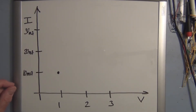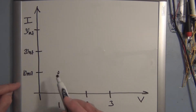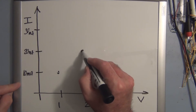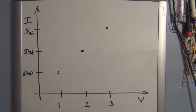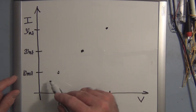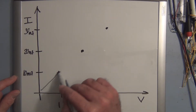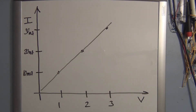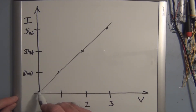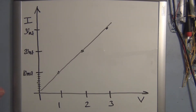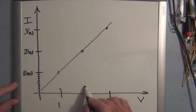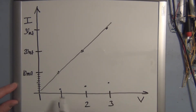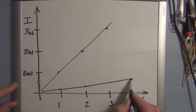For the 100 ohm resistor: at one volt we had 10 milliamps, at two volts we had 20 milliamps, and at three volts we had 30 milliamps. All you need is two points to draw a line — here we have three. For the 1k resistor: at one volt we had one milliamp, at two volts we had two milliamps, and at three volts we had three milliamps. We draw a straight line through those.